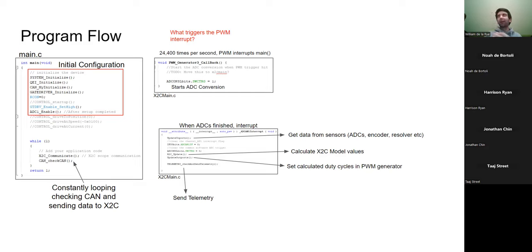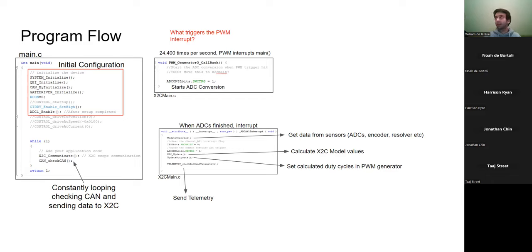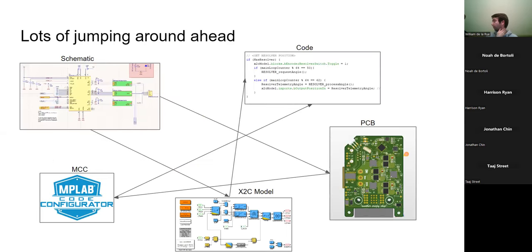The X2C communicate function gets all the telemetry from imports, outputs, and values inside the blocks, and sends it over the UART cable that we sometimes plug into the laptops so we can plot them on the computer. It's actually session-based - the PIC and computer talk and interact. Why do we only measure two of three phases? You just don't need to - and in fact the Clarke transform block in XGC only uses two of the inverse Clarke inputs anyway.